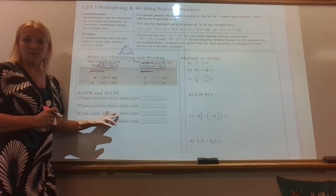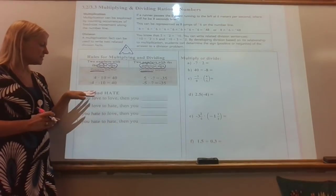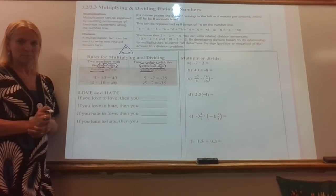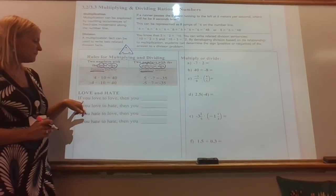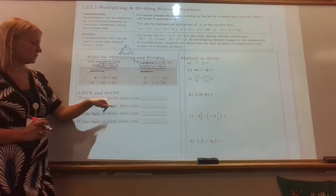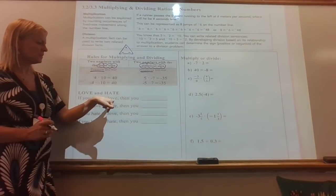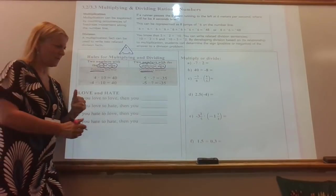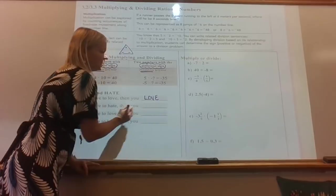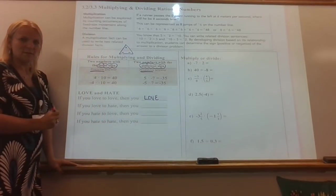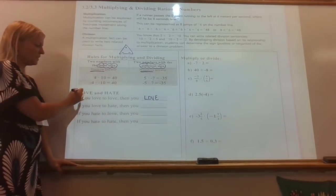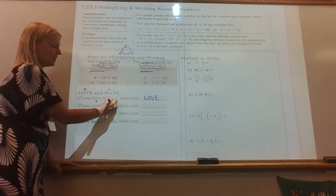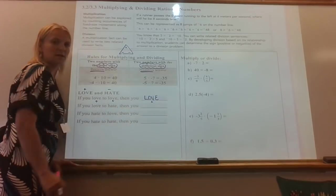One last scenario, which you may not have heard of before, is a love and hate relationship. This helps you think of the sign of the answer. So here's how it works. If you love to love, would that make you a lover or a hater? Well, if you love to love, obviously that means you love. How does that relate to positives and negatives? If love is positive, hate is negative, that's showing you a positive and a positive results in a positive.